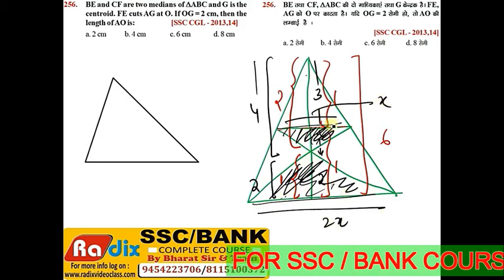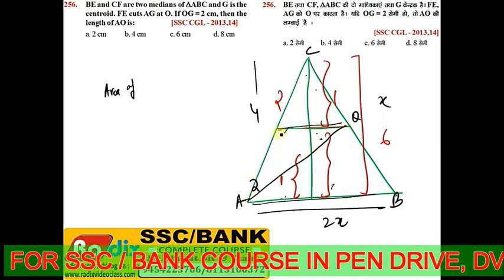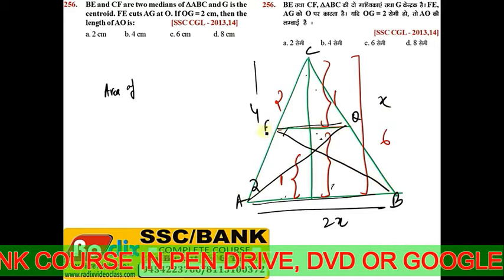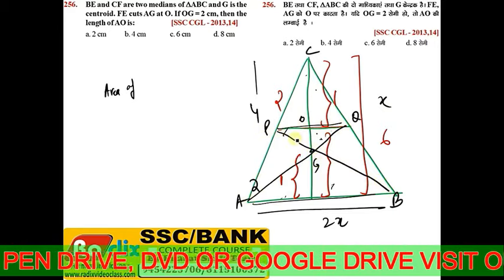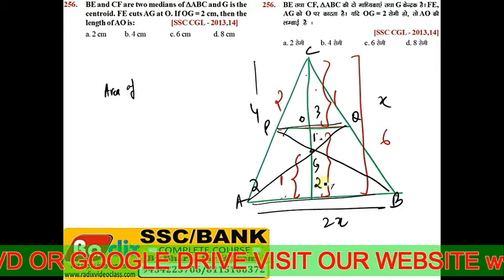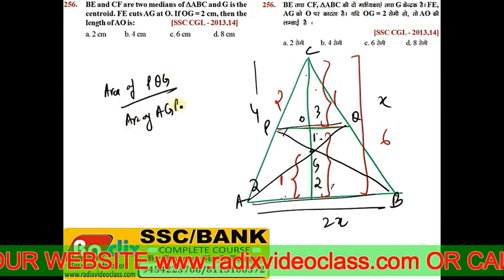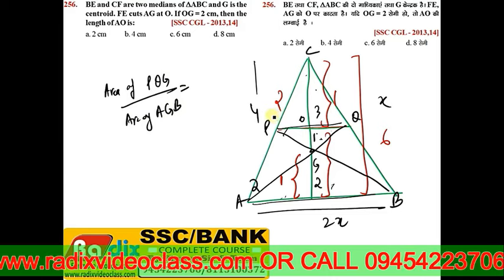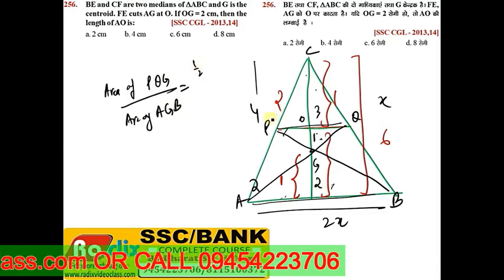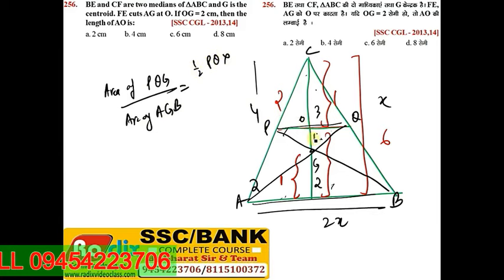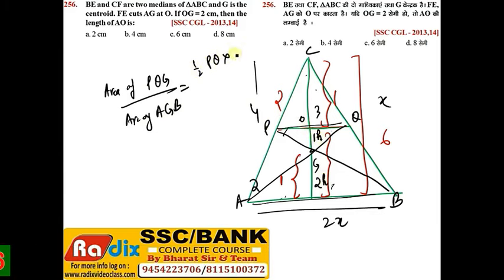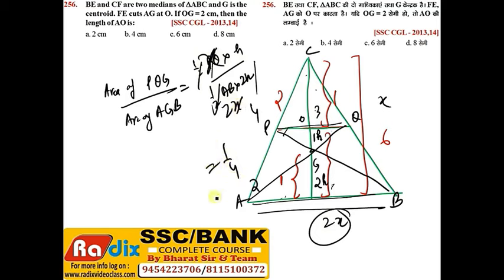Now the area of this part. This was P, Q and G. Now the area of P, Q, G upon area of A, G, B. What is the area? Half base into height. Half base is P, Q. And height is the part of this one? Think about H, this will be 2H. So H upon half AB into 2H. How much AB is? 2X. So it will be 1 by 4. What is the ratio of this?